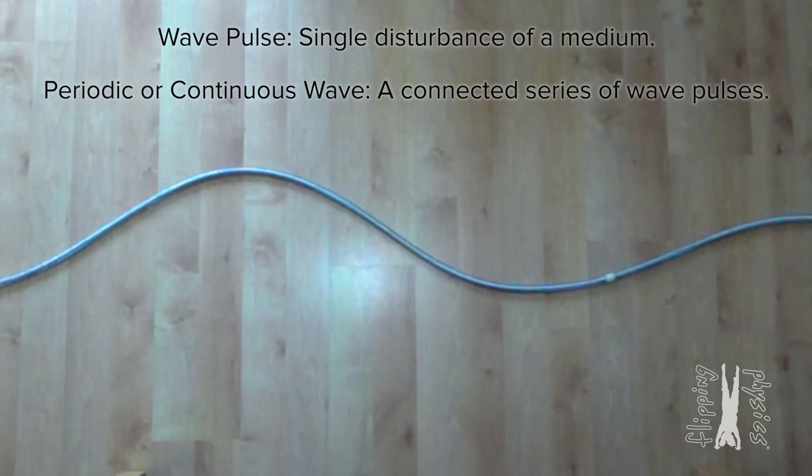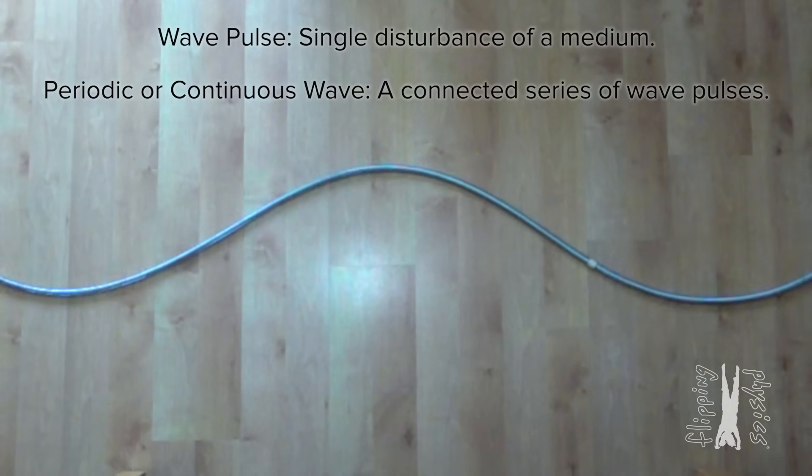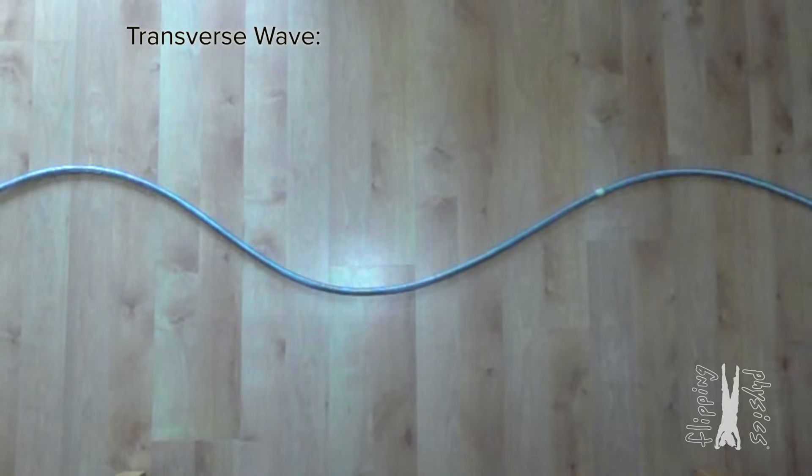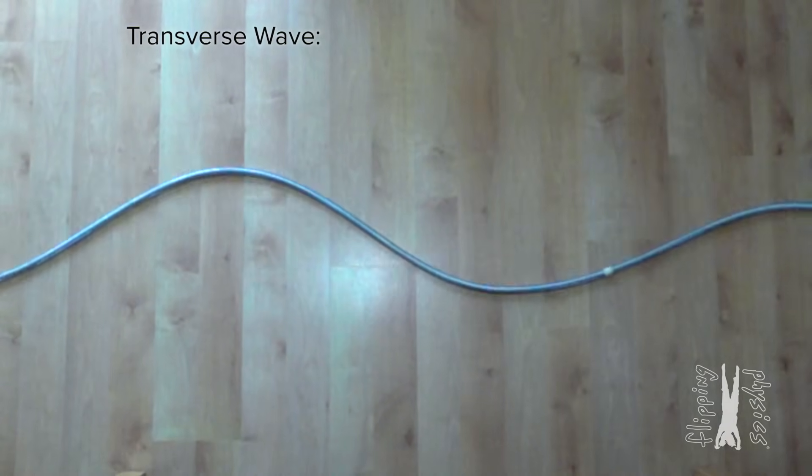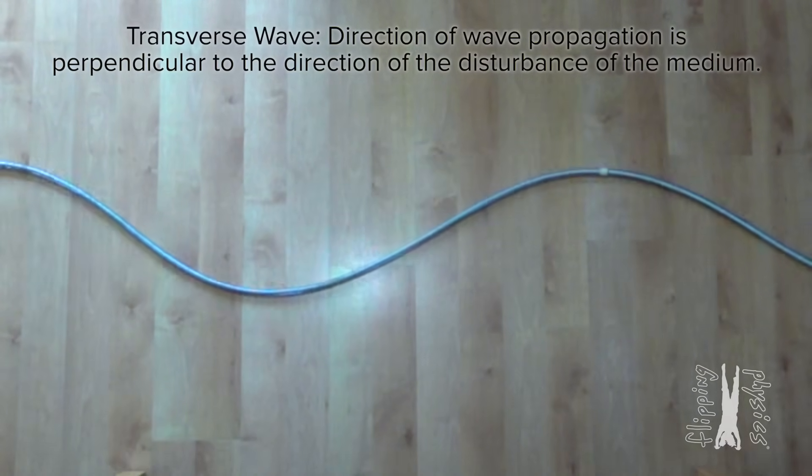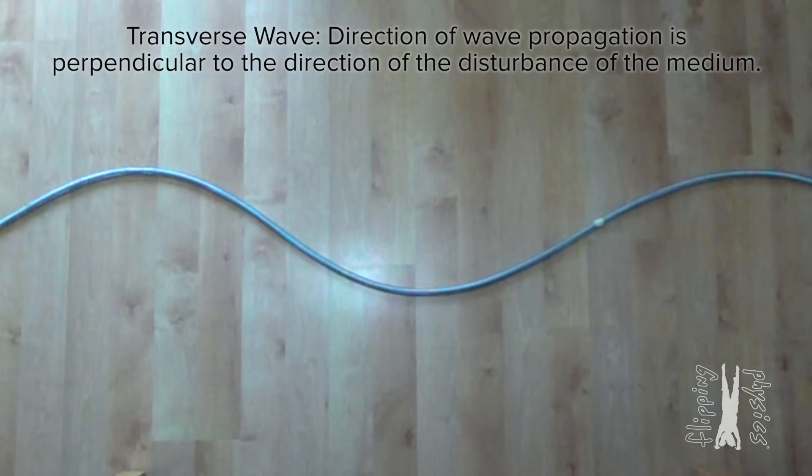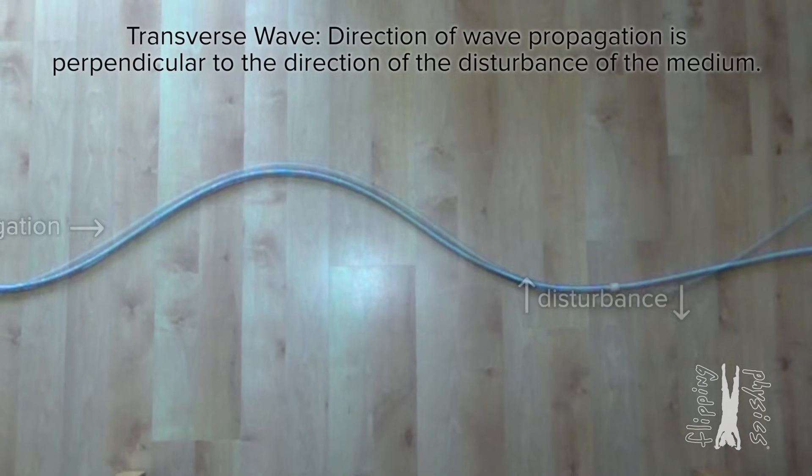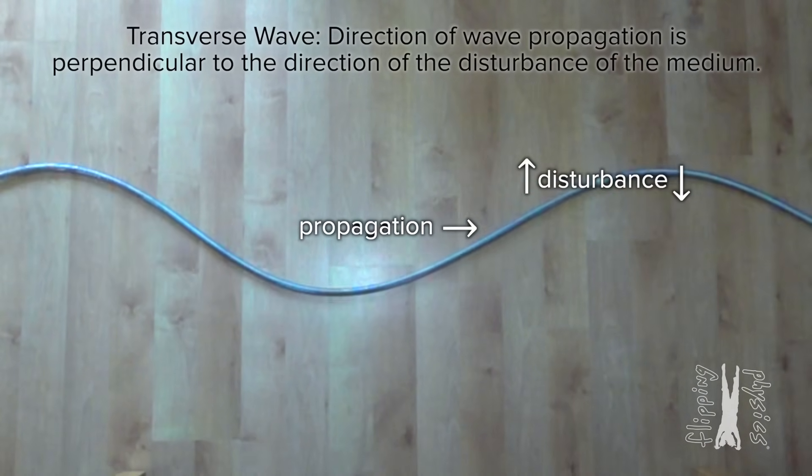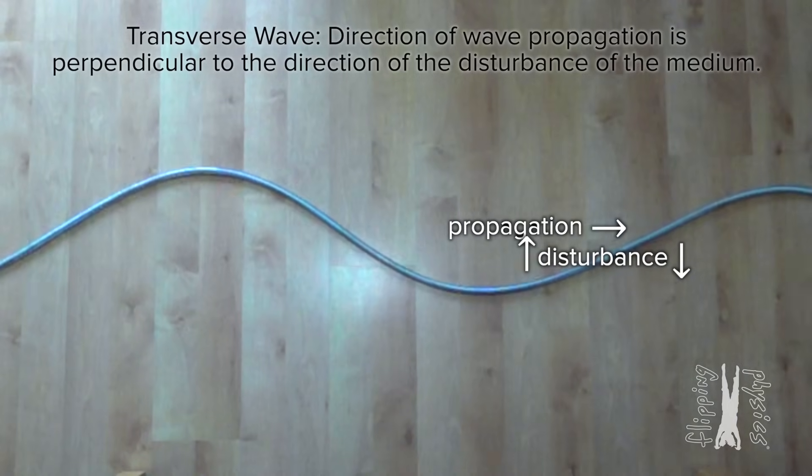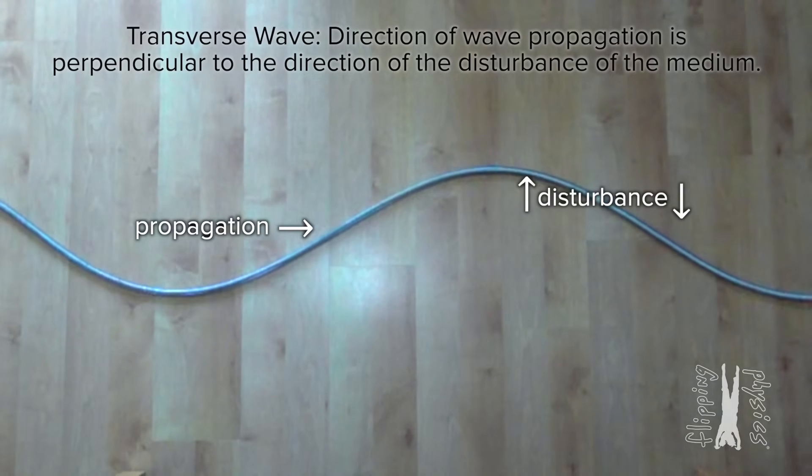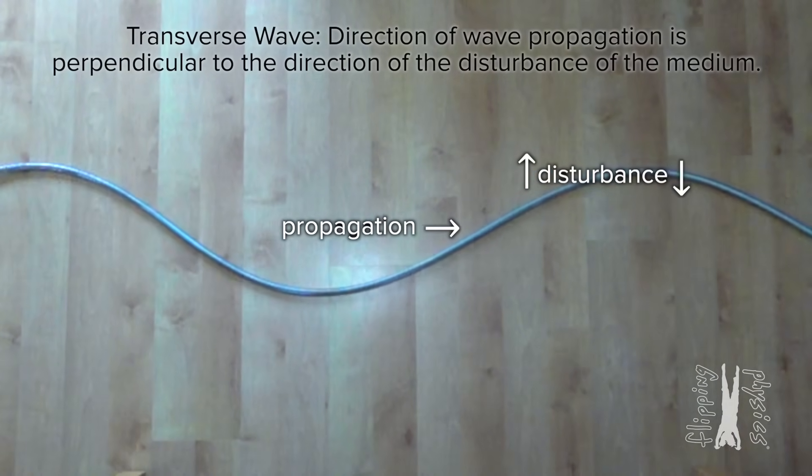Now I do want to talk about two different types of mechanical waves. The wave we have been looking at this whole time is called a transverse wave. A transverse wave is where the direction of wave propagation is perpendicular to the direction of the disturbance of the medium. As you can see, the direction of wave propagation in this example is horizontal and the direction of the disturbance of the medium is vertical. Therefore, the direction of wave propagation is perpendicular to the direction of the disturbance of the medium, hence transverse wave.